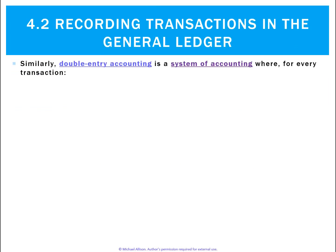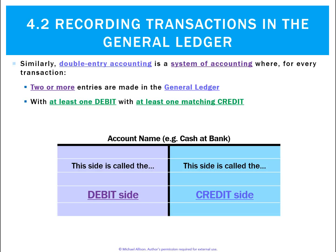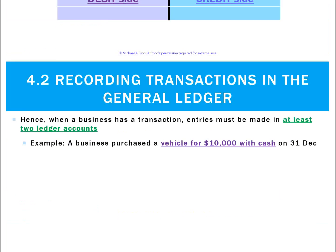Double-entry accounting is a system of accounting where every transaction will result in two or more entries being made in the general ledger. If we look at the ledger on the screen, there's got to be at least one debit with at least one matching credit. There can be more than that, but fundamentally there's got to be at least one on the debit side and one on the credit side.